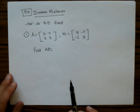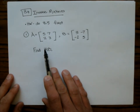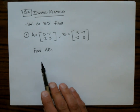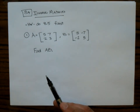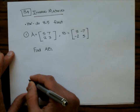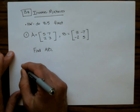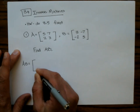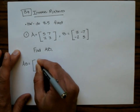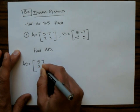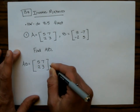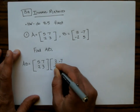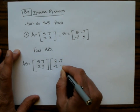Our first question starts off by asking us to multiply two matrices together. So let's go ahead and do that. AB equals the matrix [5, 7, 2, 3] times the matrix [3, -7, -2, 5].